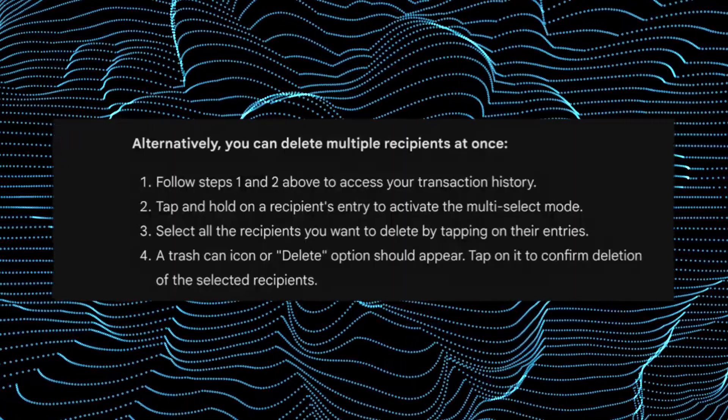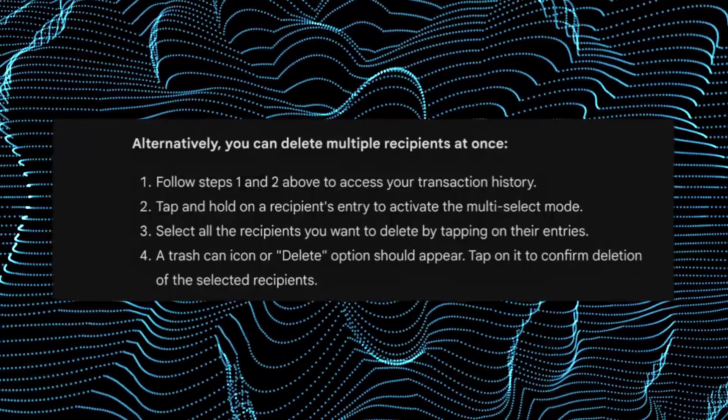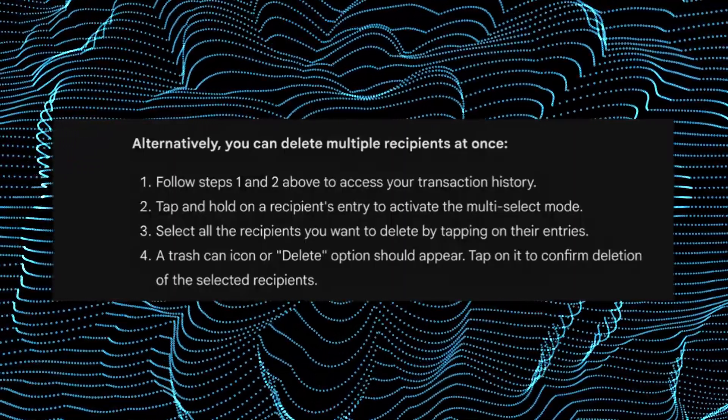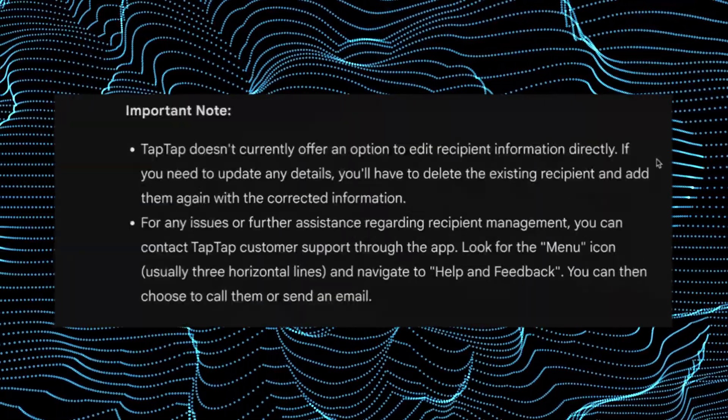Select all the recipients you want to delete by tapping on their entries. A trash can icon or delete option should appear. Tap on it to confirm deletion of the selected recipients.